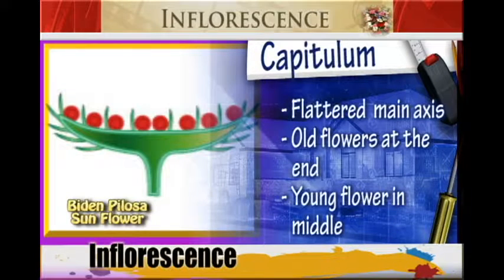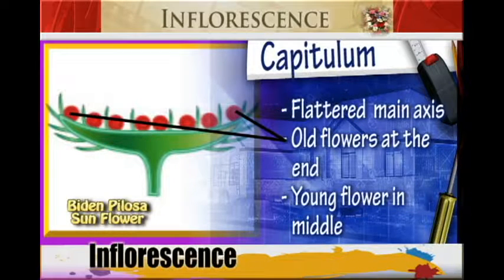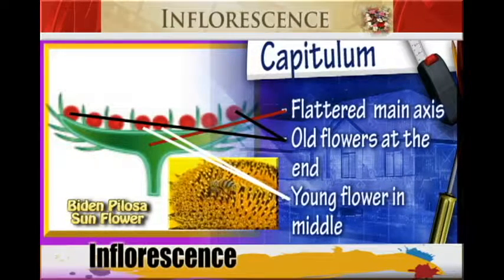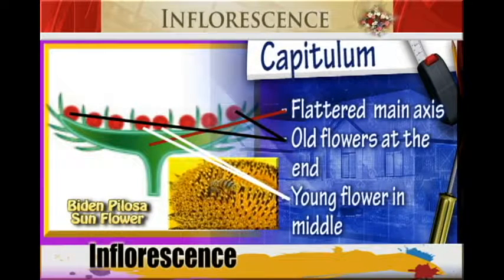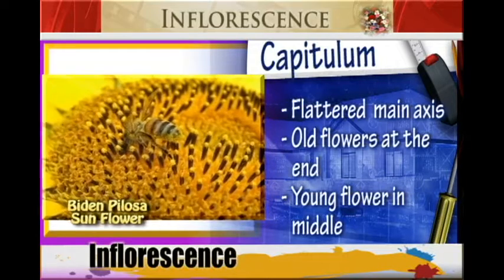We have the Capitulum. These are flattened main axis inflorescence. It consists of old flowers at the end of the axis and the young flowers in the middle of the axis, which is the Capitulum. This type of inflorescence we find in Bidens pilosa and also Sunflower.